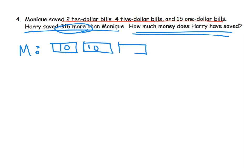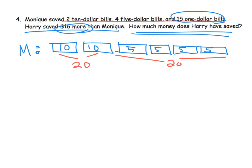So Monique saved two $10 bills, she saved four $5 bills, and then 15 $1 bills. I'm going to hold off on that for a second. So two $10 bills, that's $20. Four $5 bills - that's $5, $10, $15, $20, that's also $20. So $20 plus $20 gives us $40. So together she has $40. But we have to add in that $15, $1 bills. So Monique has $55.